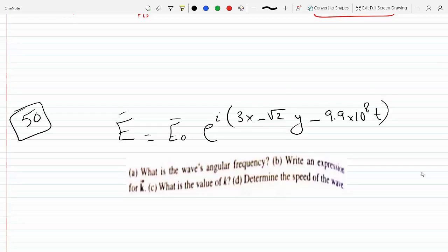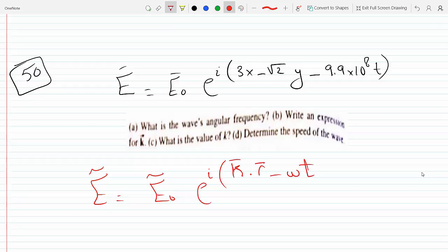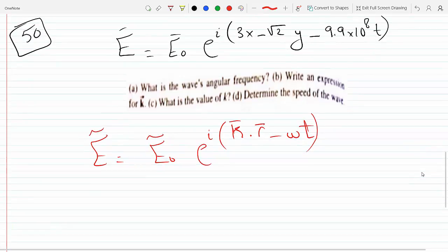The general form for the electric field is E₀ times e to the i times (K·R - ωt). Of course, we take the real part of whatever that is, because the electric field has to be physically there. So it's the real part of the function e to the i times K - K here is a vector - dot R minus omega t.